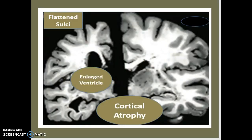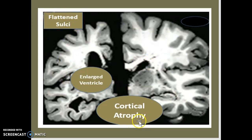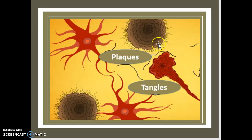Here is a photo of a human brain. As you can see, the enlarged ventricles are very spaced out, and the flattened sulci and cortical atrophy are very abnormal. What basically goes on from here is that there are plaques and tangles that chemically react within the brain, and this is what causes Alzheimer's in the most part.